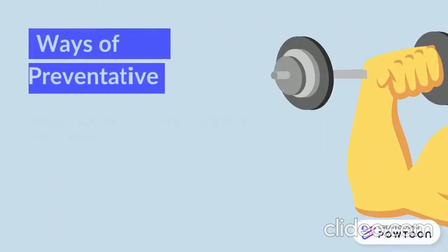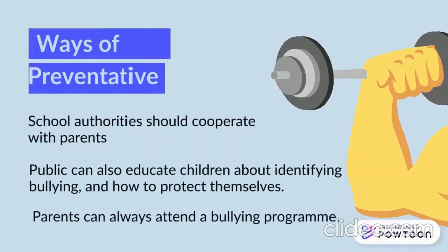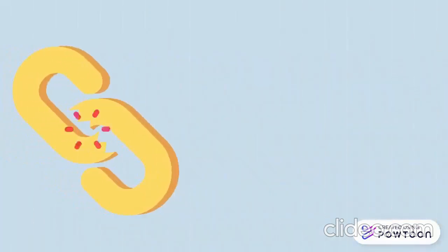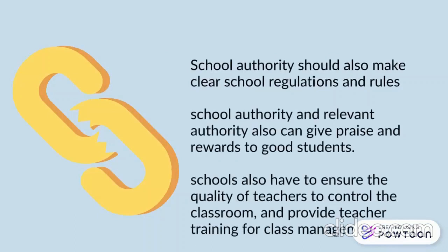Ways to prevent bullying: first, schools should cooperate with parents. Second, the public can also educate children about identifying feelings and how to protect themselves, and parents can always attend school programs. Besides that, schools should also make clear school regulations and rules. Schools and related authorities can also give praise and rewards to good students. Schools also have to ensure the quality of teachers to control the classroom and provide training for classroom management.